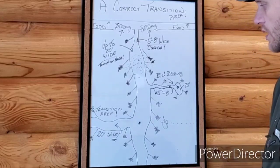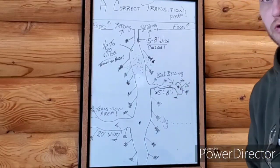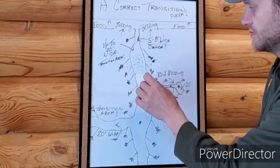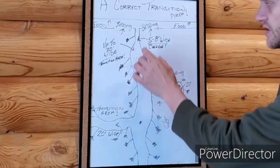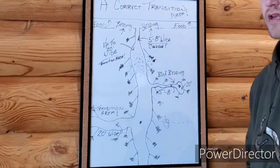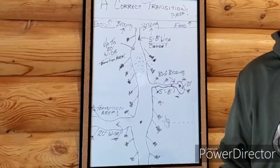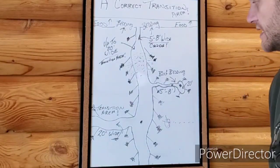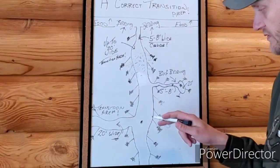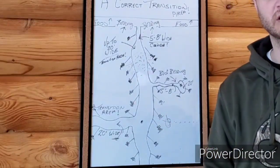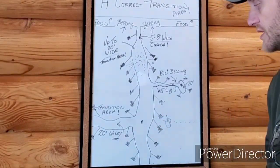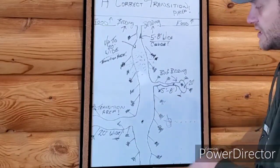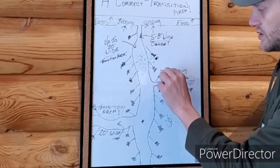What do we do along the way? Anywhere between your stand location and the food — where you can get away with it without getting busted — you promote hinge cutting, which promotes bedding. But as I've always said, and you've heard me say it many times: do not hinge cut those trees too close to your stand locations.